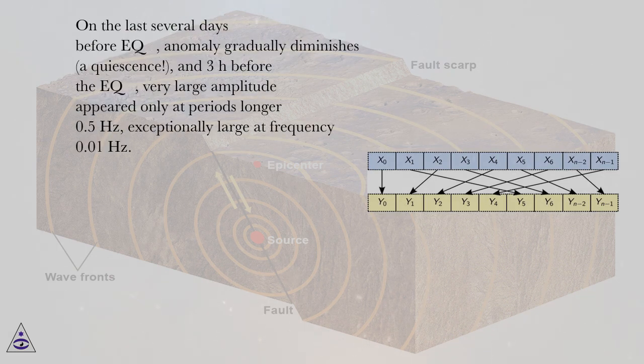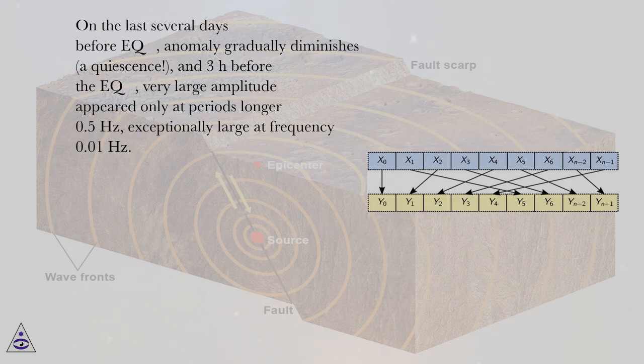On the last several days before EQ anomaly gradually diminishes, quiescence, and three hours before the EQ very large amplitude appeared only at periods longer than half a Hz, exceptionally large at frequency 0.01 Hz.